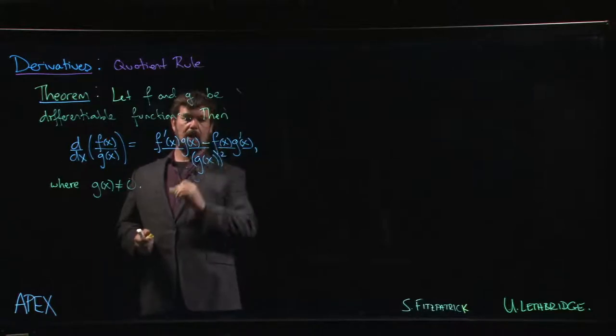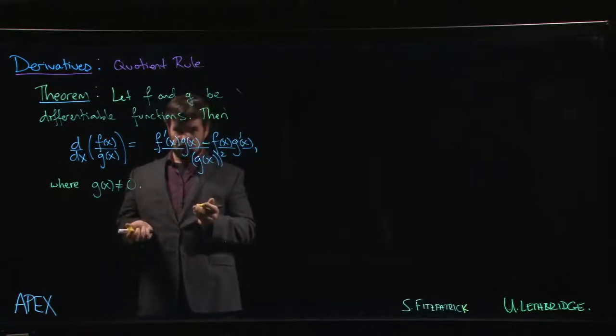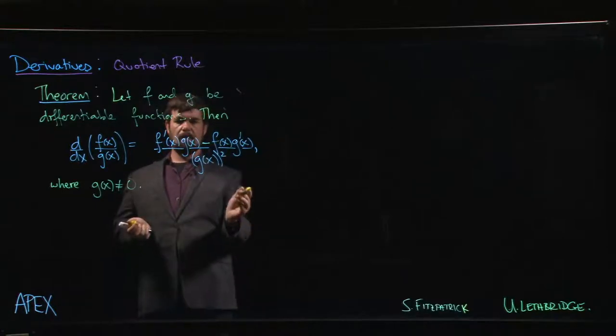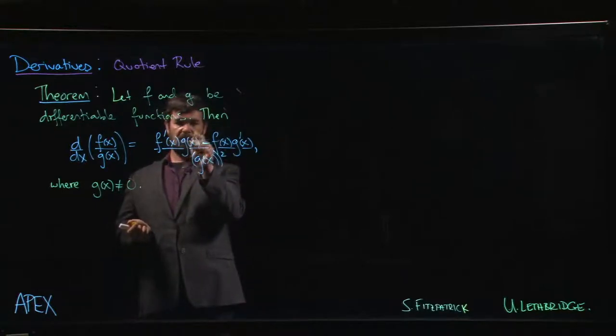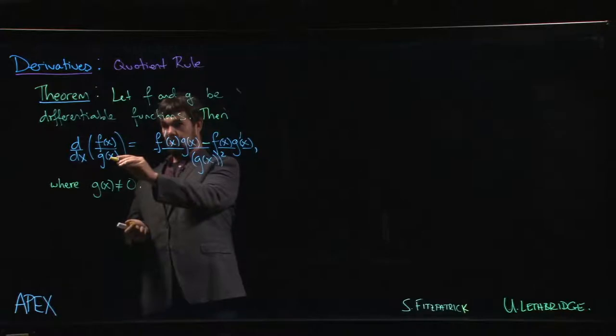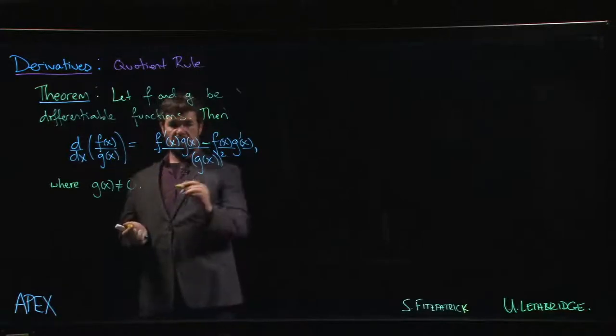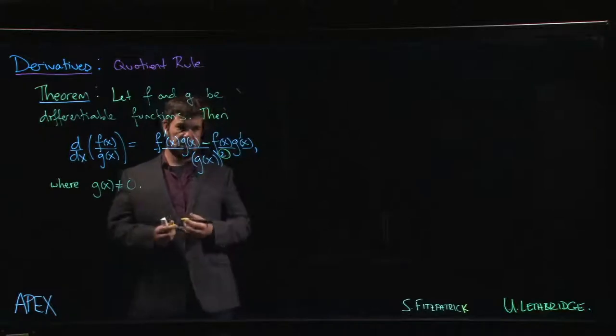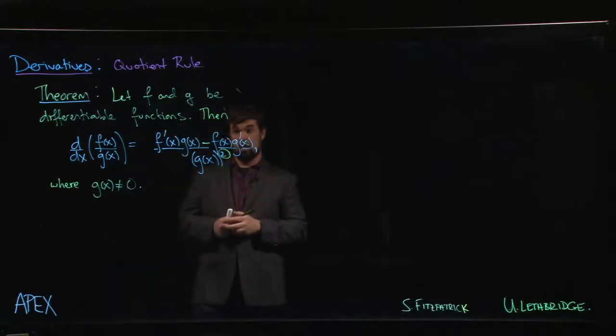we have a minus sign here instead of a plus sign in the numerator. Otherwise we have that same pattern - derivative of the first times the second, first times the derivative of the second. The other difference is this denominator. It's the function that we had on the bottom over here, g of x. It appears again, but you'll notice that it appears to the second power. So this is